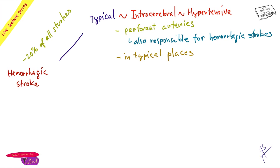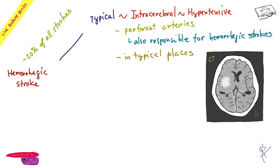Typical bleeding occurs in typical locations. On a CT or MRI, remember the image is always inverted — left and right are flipped, as if viewing the patient from the feet upward. The bleeding appears as a white chunk. Why is it white on CT? Because it's not liquid — it's coagulated blood, which has higher X-ray absorbency.